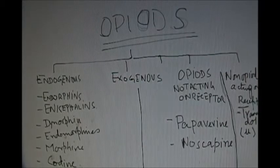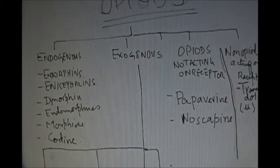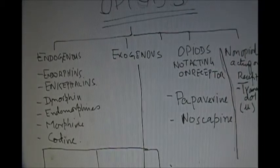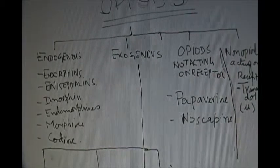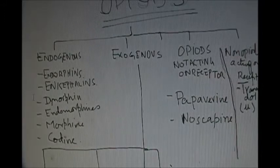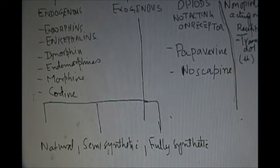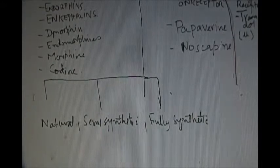The opioids may be endogenous that is produced in the body or exogenous. The endogenous peptides are endorphins, enkephalins, dynorphins, endomorphins, morphine and codeine.